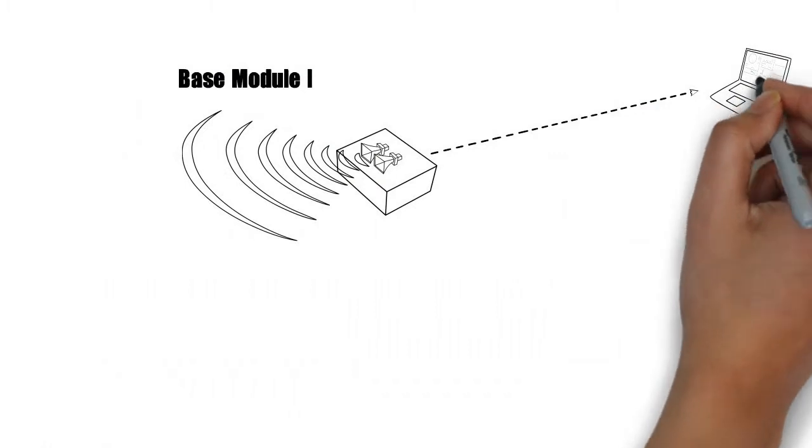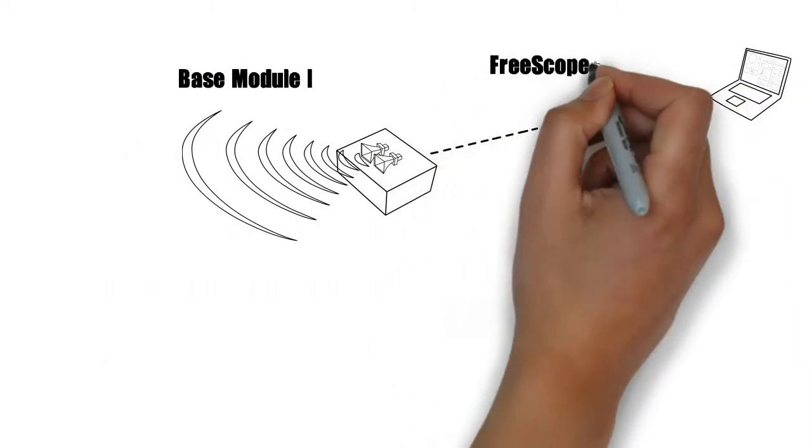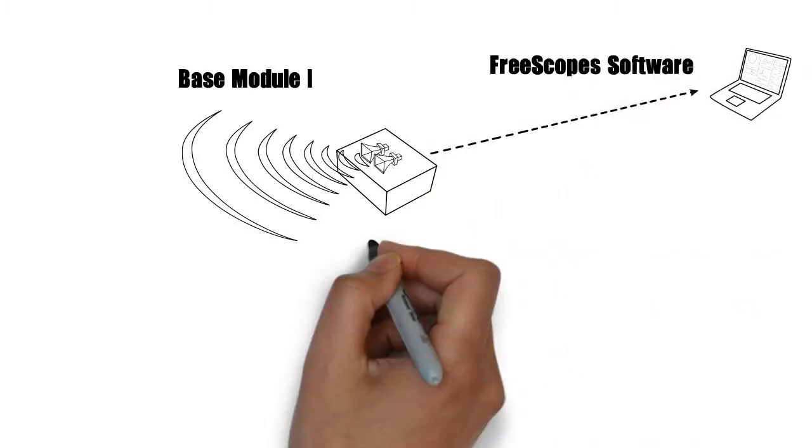Using a wireless LAN, students can access it and operate all possible scopes like an A-scope or a B-scope with the user-friendly FreeScope software.